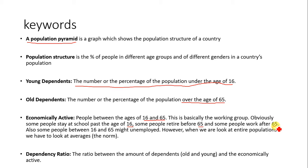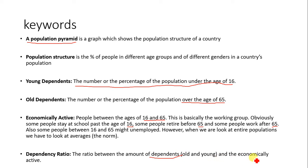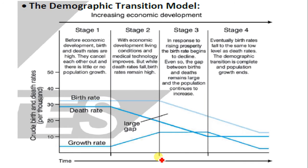Obviously some people stay at school past the age of 16, while some people retire before 65, and some people work after 65. Some people between 16 and 65 might also be unemployed. However, when we look at an entire population we have to look at averages — it's just based on global averages. The dependency ratio is the ratio between the amount of dependent people (older and young) and the economically active population.